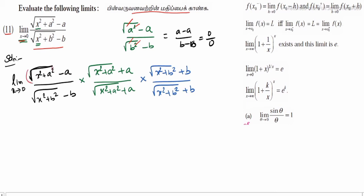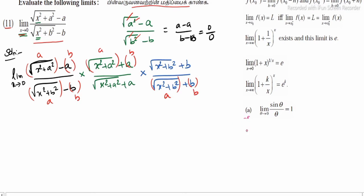In the first term, using the identity (a minus b)(a plus b) equals a squared minus b squared: in the numerator we get square root of x squared plus a squared minus a, times square root of x squared plus a squared plus a, which gives x squared plus a squared minus a squared. Similarly in the denominator, the corresponding expansion gives x squared plus b squared minus b squared.